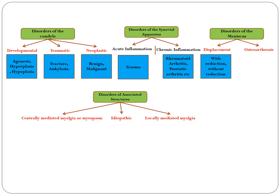Acute inflammation happens when the patient has a sudden onset of trauma — for example, a patient falls and sustains a direct injury to the TMJ. Chronic inflammation results from a previous history of trauma that then becomes a long-standing problem.